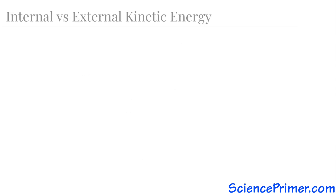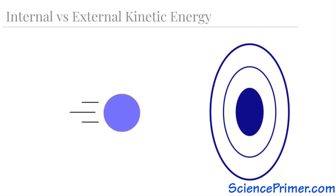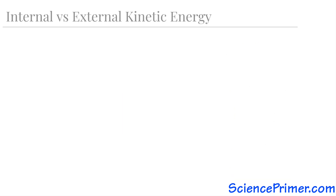Objects can contain different forms of energy at the same time. This ball has both internal and external kinetic energy. The external kinetic energy is the movement of the ball towards the target, while the internal kinetic energy is its temperature. By throwing the ball harder, we can increase its external kinetic energy without changing its internal kinetic energy. Alternatively, we can warm the ball, increasing its internal kinetic energy without adding anything to its external kinetic energy. Different types of energy can interact: external kinetic energy can increase internal kinetic energy via friction and air resistance.